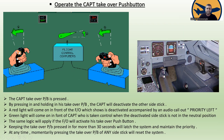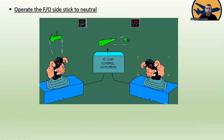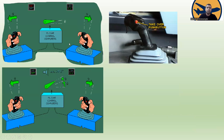The same logic applies when the first officer presses his takeover push button. Keeping the takeover push button pressed for more than 30 seconds will latch the system and maintain the priority. At any time, momentarily pressing the takeover push button of either side stick will reset the system. When you release the takeover push button and the deactivated side stick is returned to neutral, the green light on the captain's side goes off.